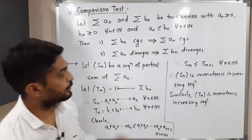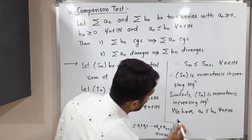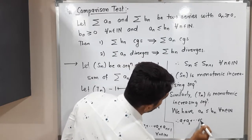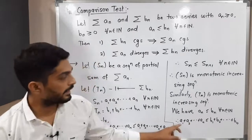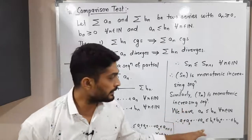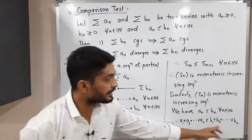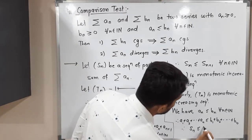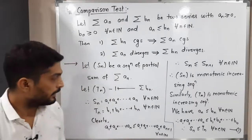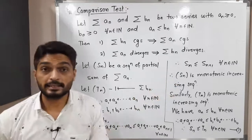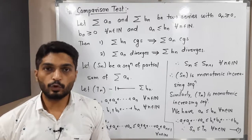Coming back to the given condition aₙ ≤ bₙ for all n in the natural numbers, we can write: a₁ + a₂ + ... + aₙ ≤ b₁ + b₂ + ... + bₙ, since each corresponding term satisfies aₖ ≤ bₖ. The left-hand side is Sₙ and the right-hand side is Tₙ. Therefore Sₙ ≤ Tₙ for all n in the natural numbers. We call this Inequality 1.